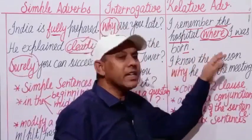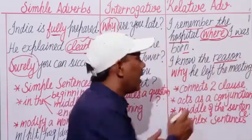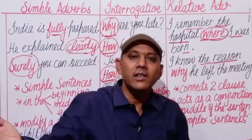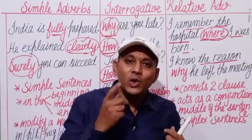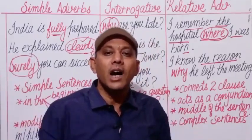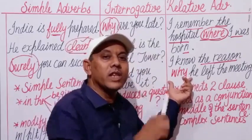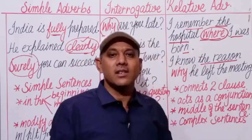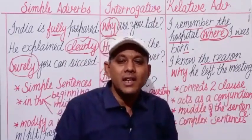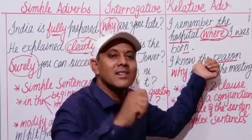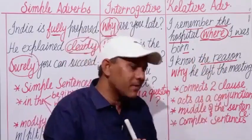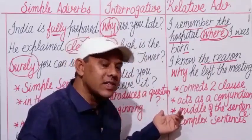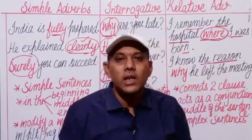'I know the reason why he left the meeting.' Here the antecedent is 'reason,' and 'why' is the relative adverb. The relative adverb is usually used in the middle of the sentence to join two clauses — it acts as a conjunction and forms complex sentences. This is the basic difference between simple adverbs, interrogative adverbs, and relative adverbs.